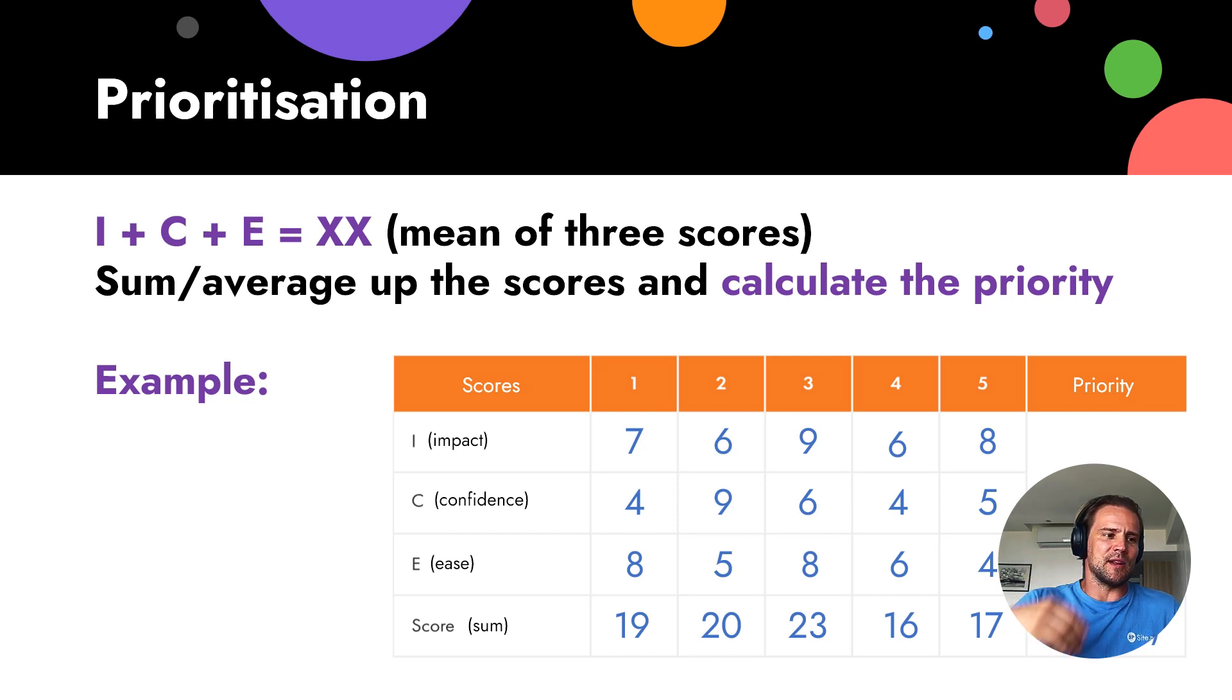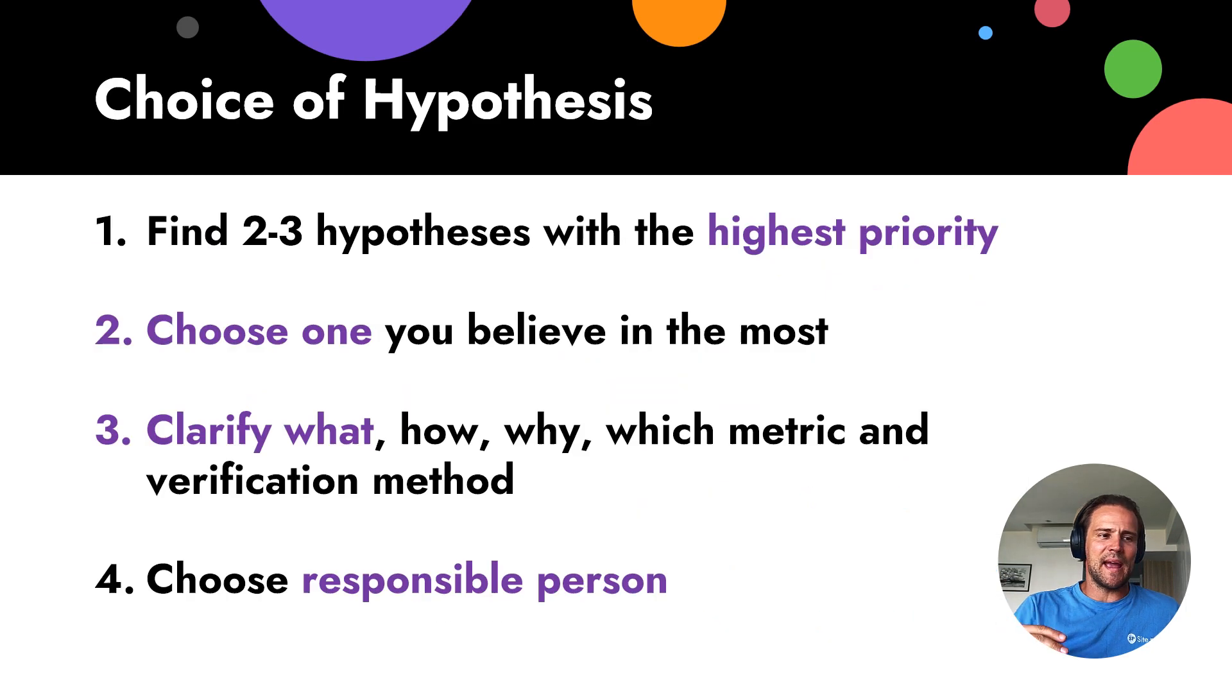So, you calculate the priority. For every hypothesis, what is important, you get one number. You can see it in the right bottom. Let's say, 90. And then you compare all your hypotheses, all your 50 hypotheses, which 1, 2 or 3 are best. You collect, let's say, 2 or 3 best hypotheses that get better scores from your team.